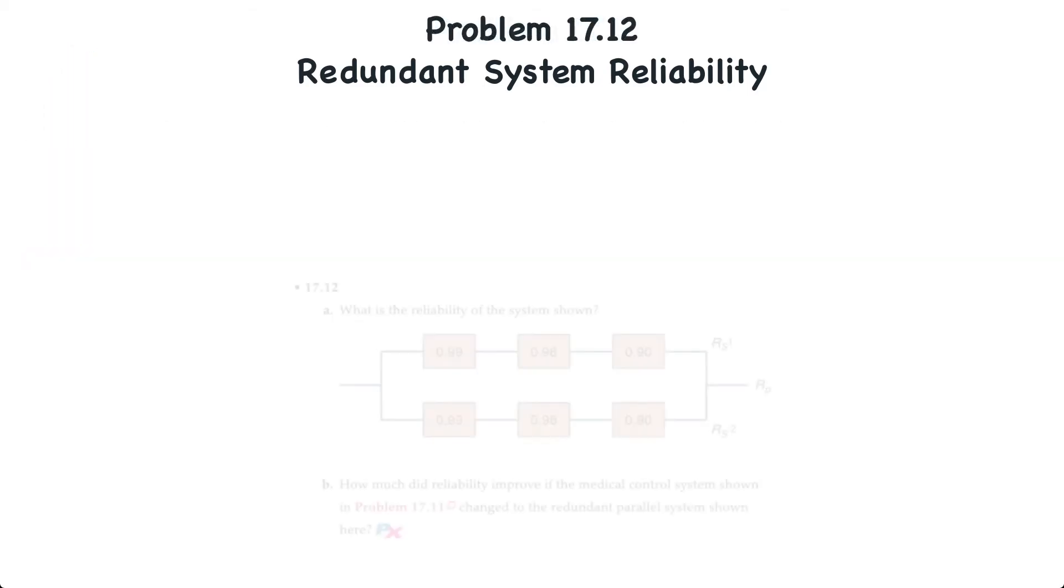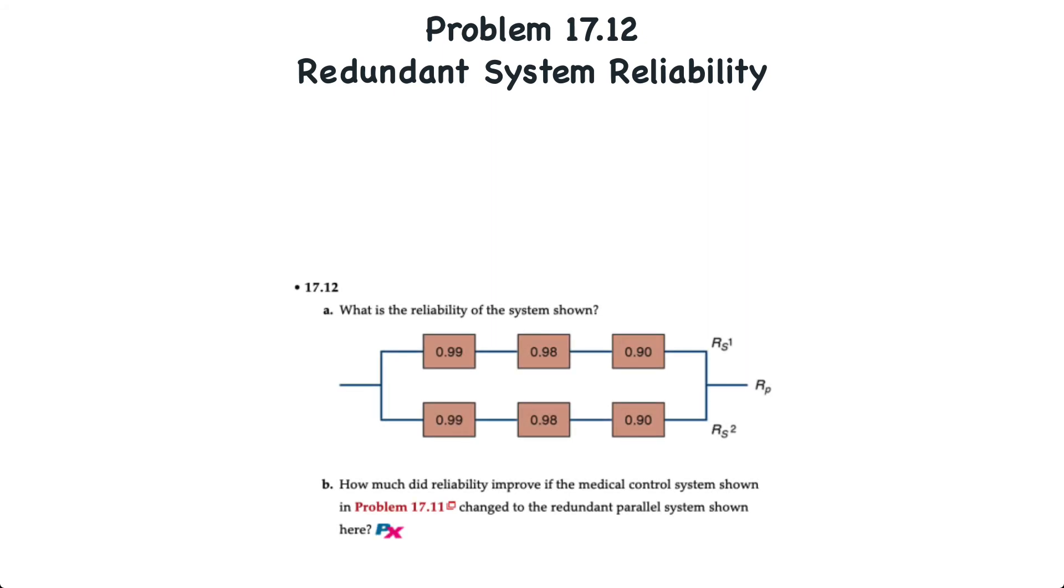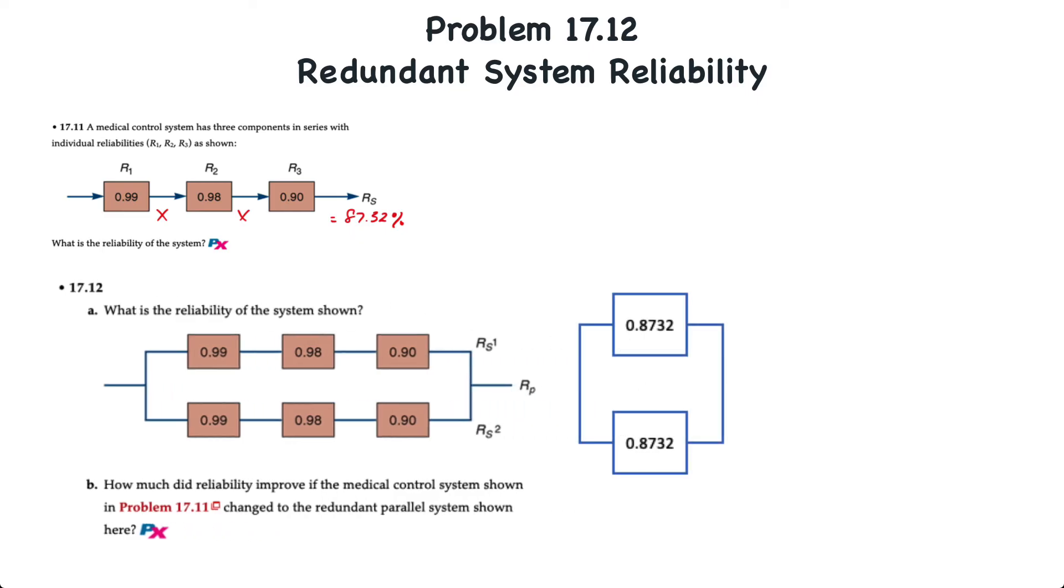And now on to problem 17.12. This one is actually a continuation of problem 17.11 that was covered in another video, which calculates the reliability of systems in series. In this question, redundancy is added to the system with two subsystems that are in series that are parallel to each other. We can do this in three steps.